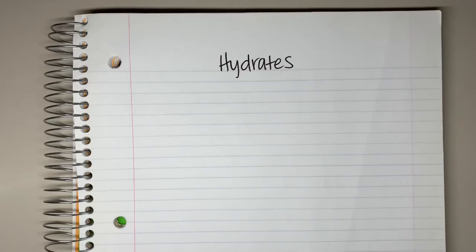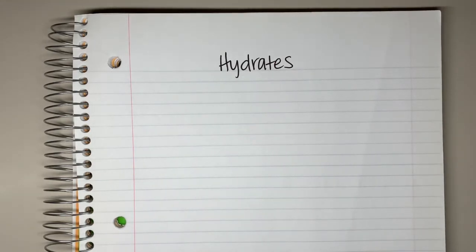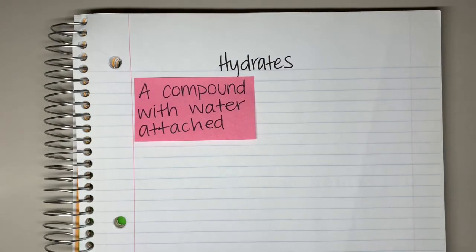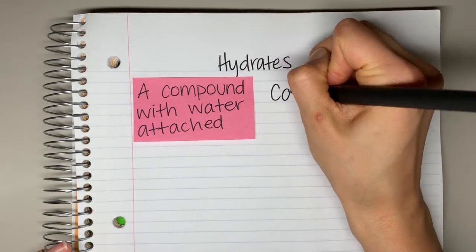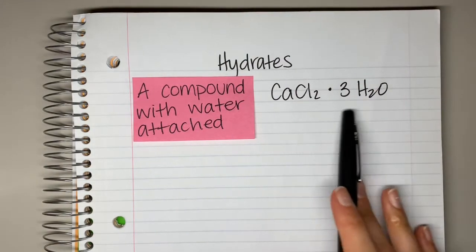In this video we are going to learn about hydrates — how to name them and how to write formulas for them. First, we need to talk about what a hydrate actually is. Think about yourself hydrating: when you hydrate, you are drinking plenty of water. A hydrate is a compound that has water attached to it.